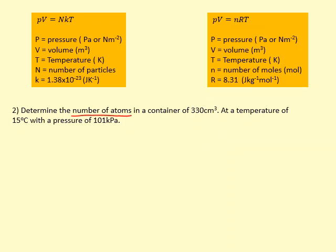In this question, they've asked us to find the number of atoms. They've given us the volume, so we'll use this equation. I need to be careful - this volume is in centimeters cubed, so I need to convert to meters cubed. To convert centimeters to meters, I'd normally divide by 100, but because it's volume with that cubed, I need to cube the conversion factor as well. That gives me 3.3 times 10 to the minus 4 meters cubed.